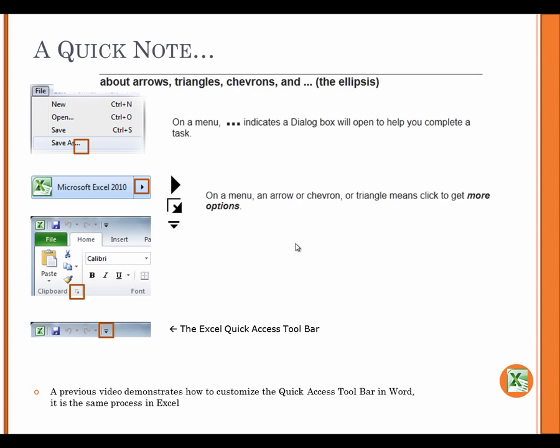On a menu, an arrow or chevron or triangle means click to get more options.